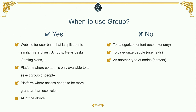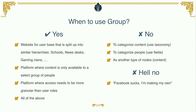People also try to categorize people with group, but it's the same thing — just use fields, slap on a taxonomy on users and be done with it. They also want to use it as another type of node: they field their groups and just want to display content. Then please don't use group — use nodes. And then there's always these people: 'Facebook sucks, I'm making my own.' The answer is hell no. Please don't use group for that. Either apply to Facebook or just drop the idea — there's a reason it's a billion-dollar company.